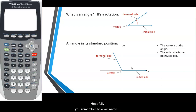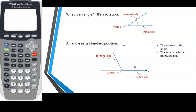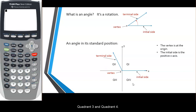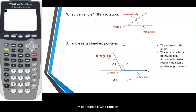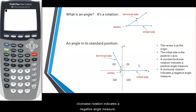Hopefully you remember how we name the four quadrants from algebra. We have quadrant one, quadrant two, quadrant three, and quadrant four. A counterclockwise rotation indicates a positive angle measure, and a clockwise rotation indicates a negative angle measure.